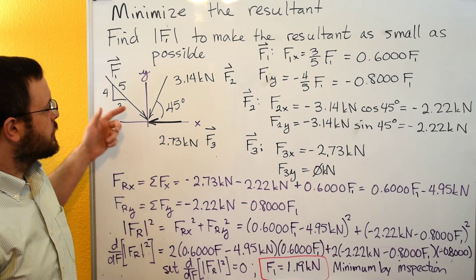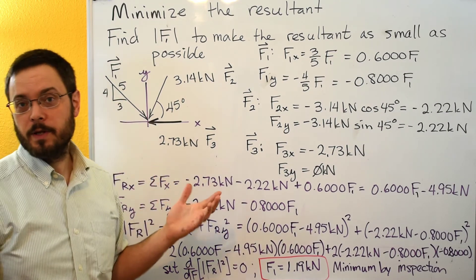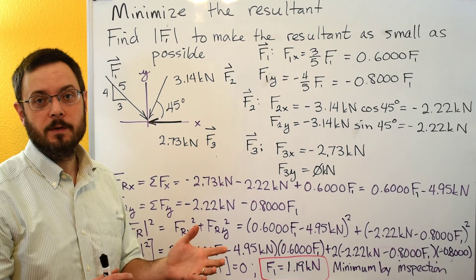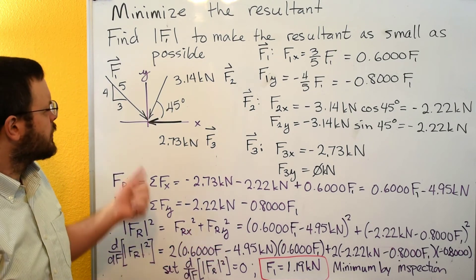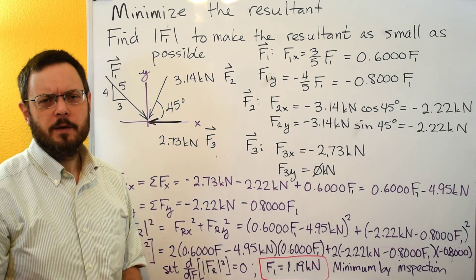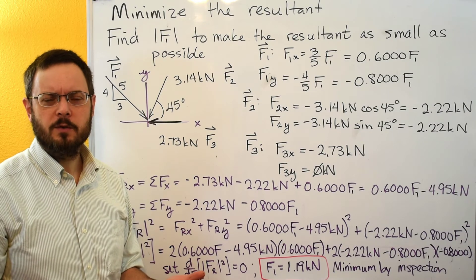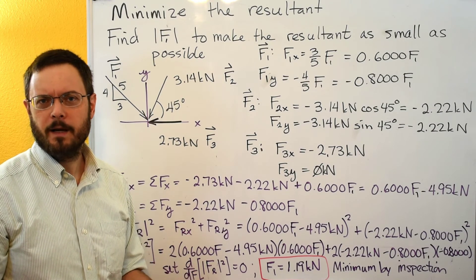The second option would be maybe there's some physical limitation that we could run it up against that would minimize it. It doesn't really look that way in this problem. So our last option is to try to find a local min or max.